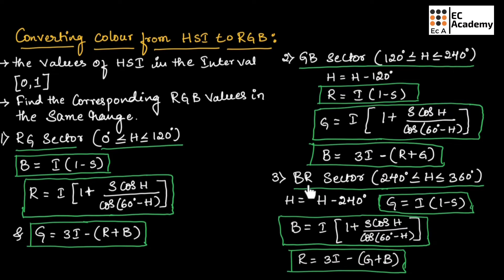In the third sector, which is BR sector, the value of H will be in the range of 240 degree and 360 degree. Here again in the first step, we need to find the new value of H by subtracting 240 degree from H. Then we need to find G using I into 1 minus S. To find B, we can use the formula I into 1 plus S cos H divided by cos 60 degree minus H, and R can be found using the formula 3I minus G plus B.